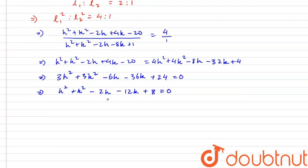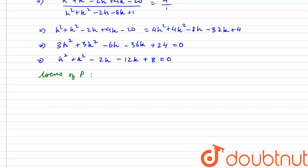These are the coordinates of P in terms of h and k. The locus of P is found by substituting x for h and y for k, giving the equation x² + y² - 2x - 12y + 8 = 0. This is the equation of a circle, and this is our solution.